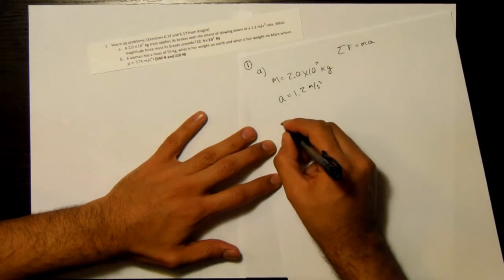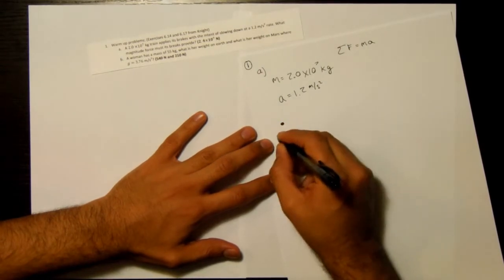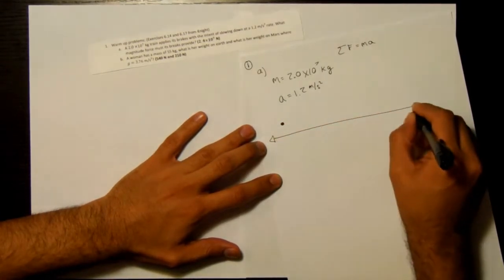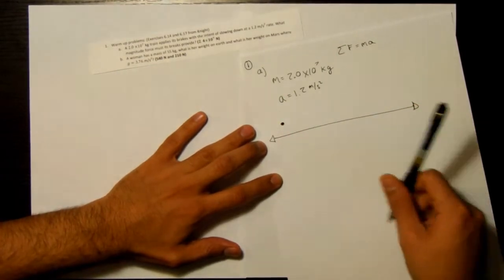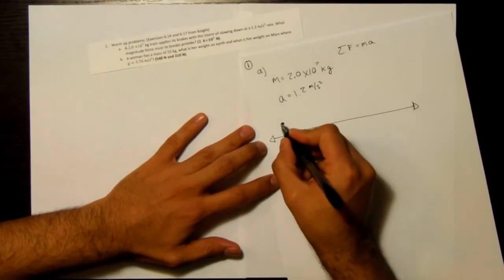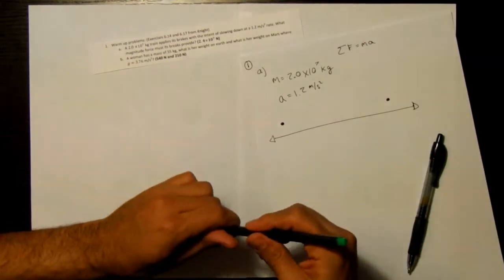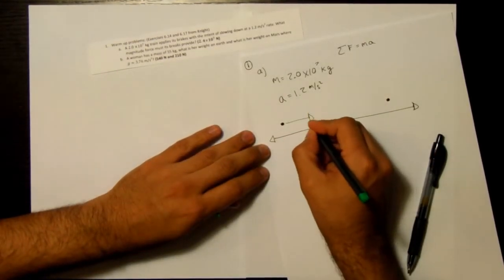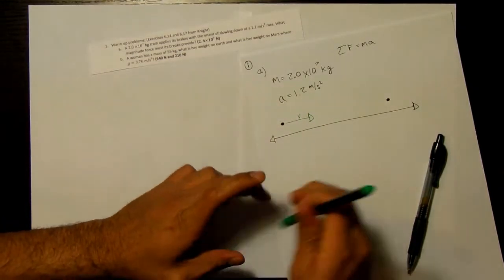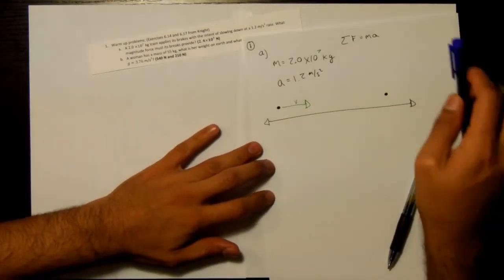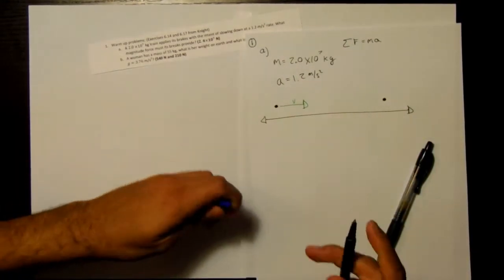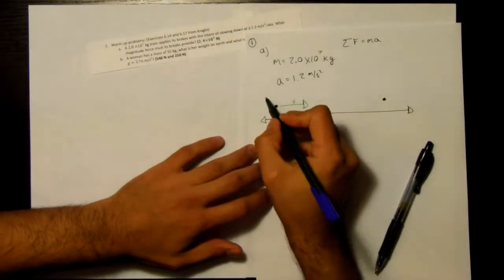If I were to draw a picture, maybe here. You can see that the train is at this spot at the beginning and then it ends over here when it stops. So it's going at some velocity.